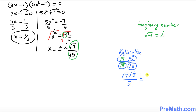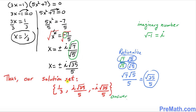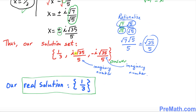Multiplying out gives square root of 35 over 5. So x equals positive or negative i times square root of 35 over 5. Our full solution set is: 1 over 3, plus i times square root of 35 over 5, and negative i times square root of 35 over 5. Since the latter two have i with them they are imaginary numbers and not real — our only real solution is 1 over 3.